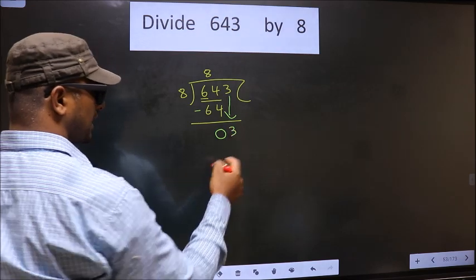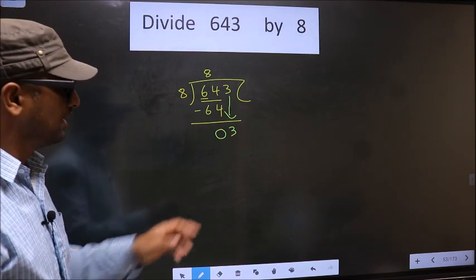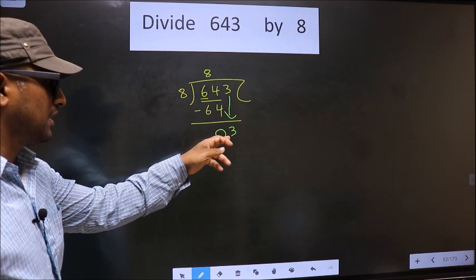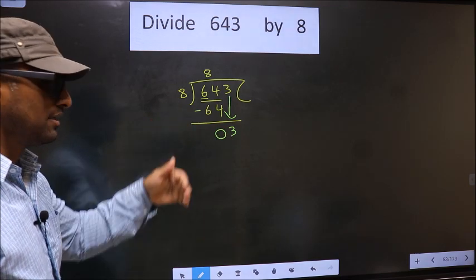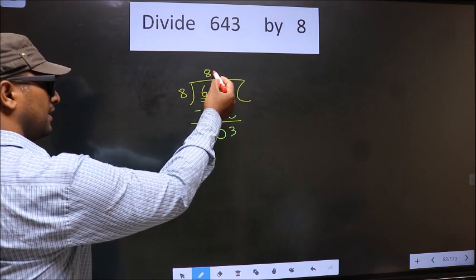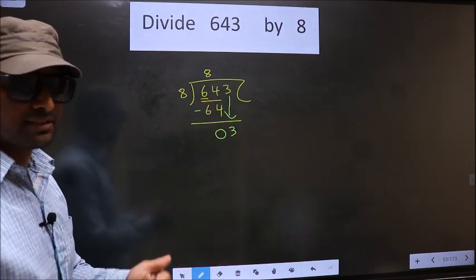This is where the mistake happens. And the mistake is this. Here we have 3, here 8. 3 is smaller than 8. So, what many do is, they put a dot here and take 0 here. Which is wrong.